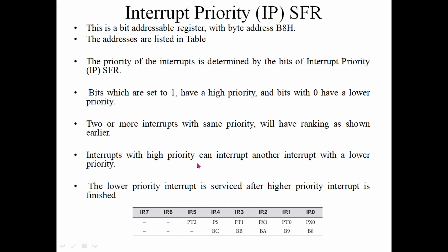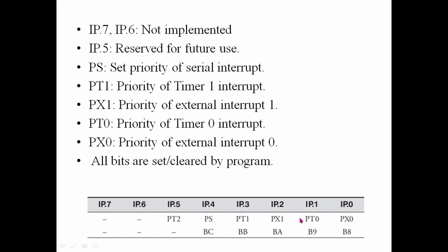An interrupt with high priority can interrupt another interrupt with lower priority. If a higher priority interrupt occurs while a lower priority ISR is running, execution switches to the higher priority. The IP register contains bits for Serial, Timer 1, External Interrupt 1, Timer 0, and External Interrupt 0.